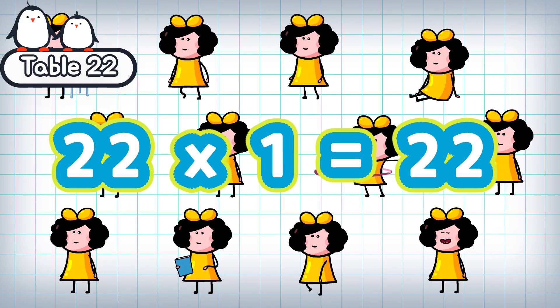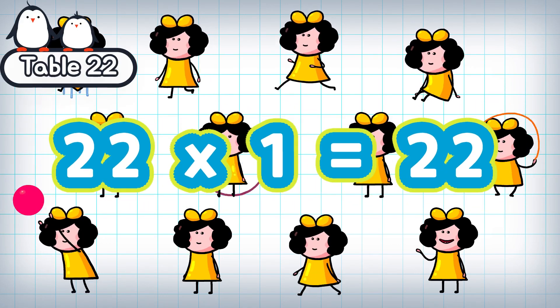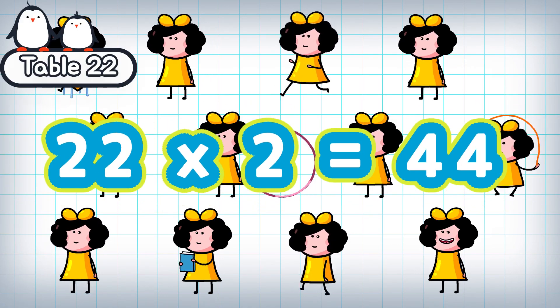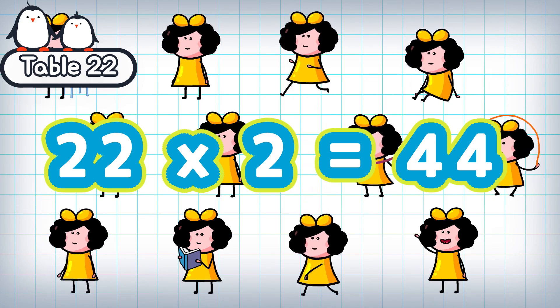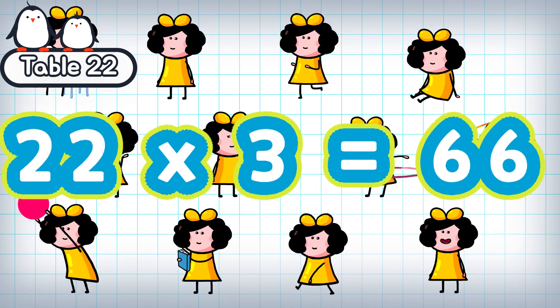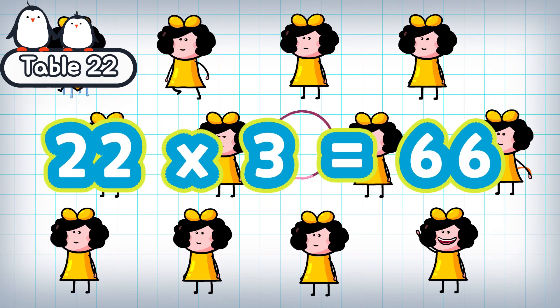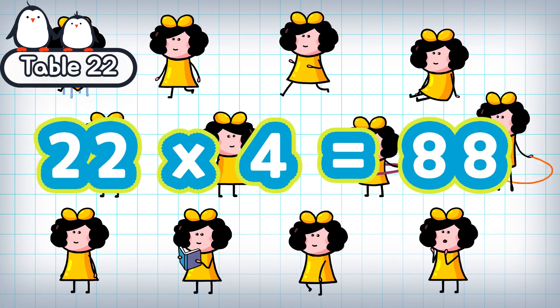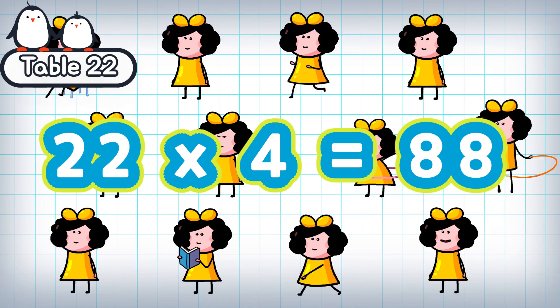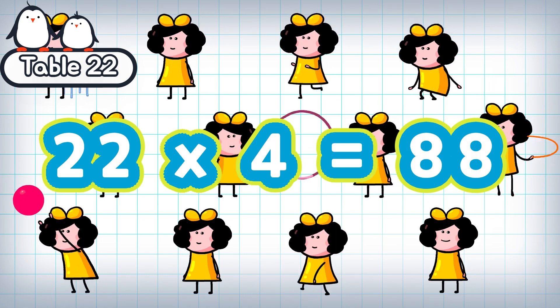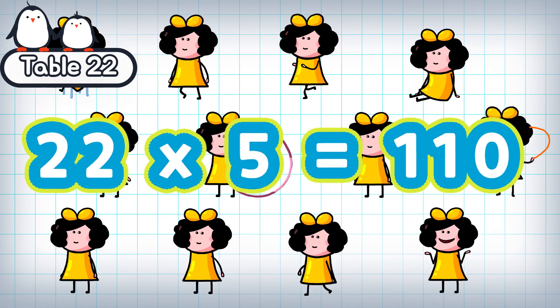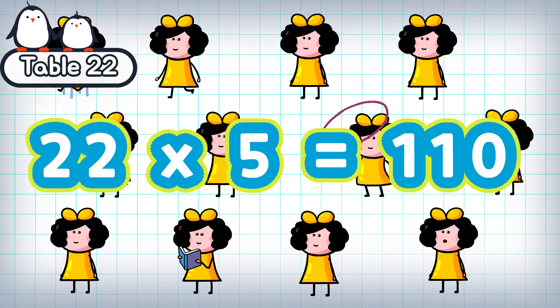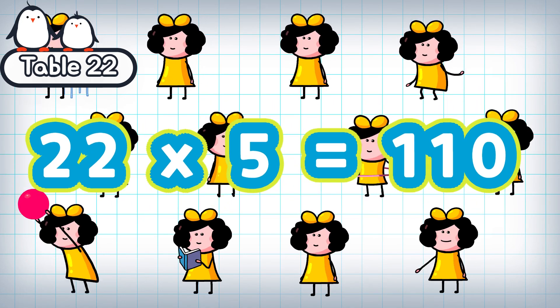22 times 1 is 22. 22 times 2 is 44. 22 times 3 is 66. 22 times 4 is 88. 22 times 5 is 110.